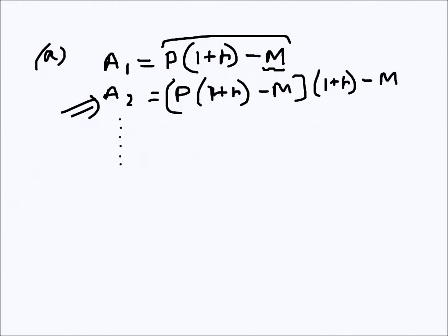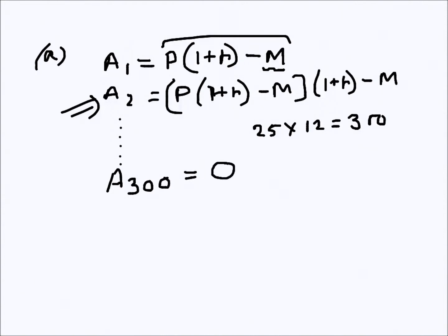The question asks why A₃₀₀ is zero. The person took the loan for a period of 25 years and is returning the money monthly. That means there are 25 × 12 = 300 months. So the amount owed after 300 months is A₃₀₀, and since the loan is taken for 300 months, after 300 months the amount owed has to be zero. This is why A₃₀₀ = 0.